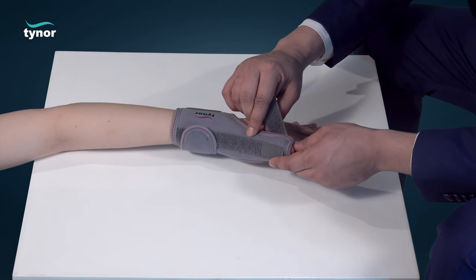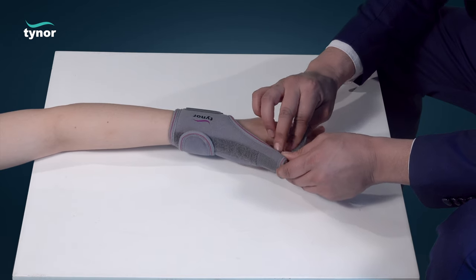Align the thumb portion of the thumb spica and fasten the hook loop fasteners.